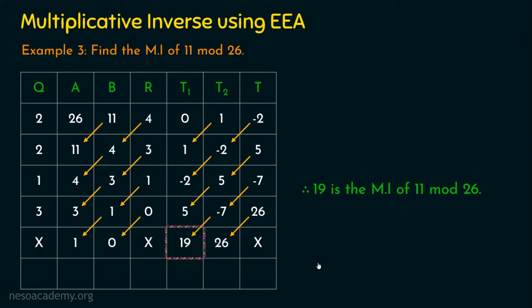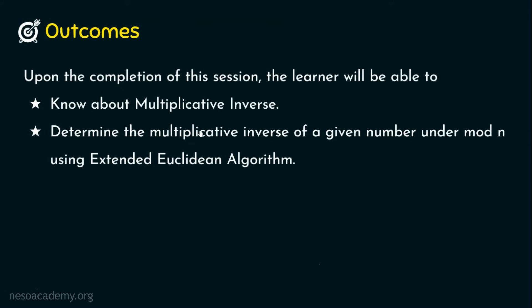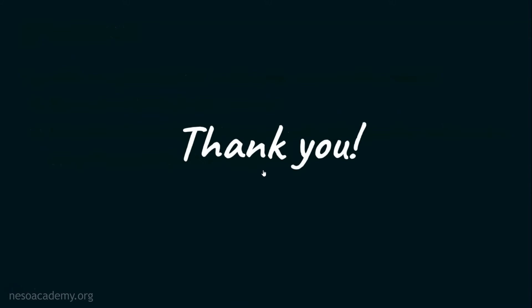Please note that the multiplicative inverse exists only when the two numbers are relatively prime — in other words, the GCD of the two numbers must be 1. In this example with 11 mod 26, GCD of 11 and 26 equals 1, meaning 1 is the only number that divides both. When working with this algorithm, always ensure the GCD of the two given numbers is 1. I hope you now understand multiplicative inverse and how to find it using the extended Euclidean algorithm. Thank you for watching.